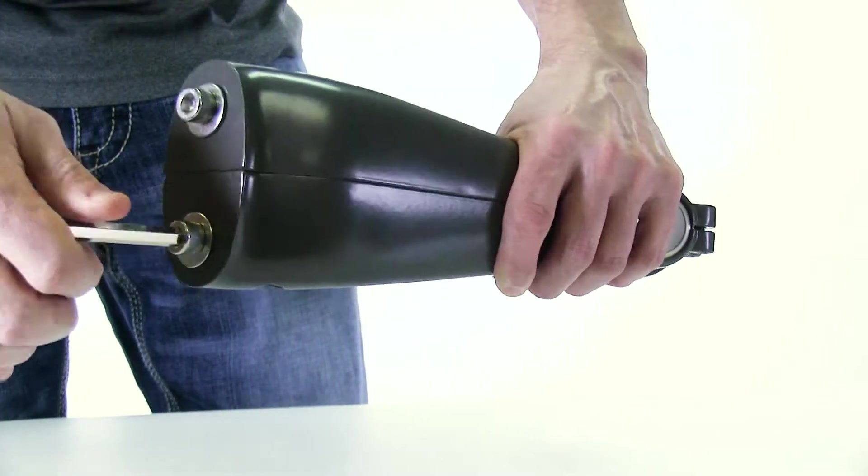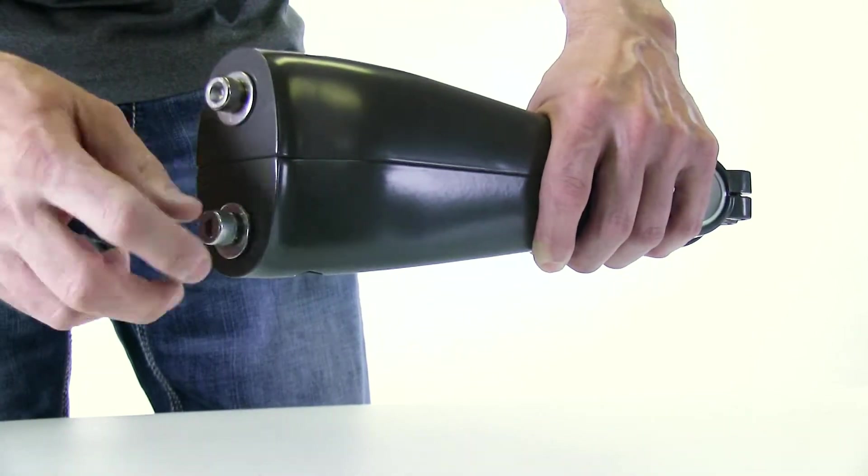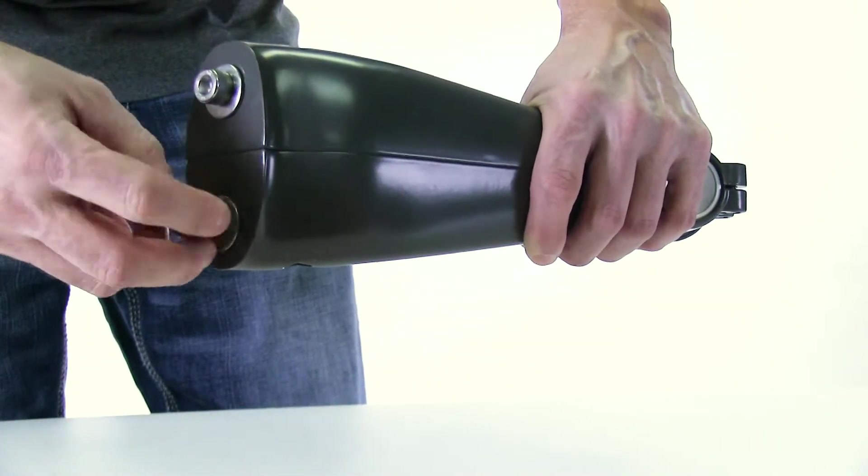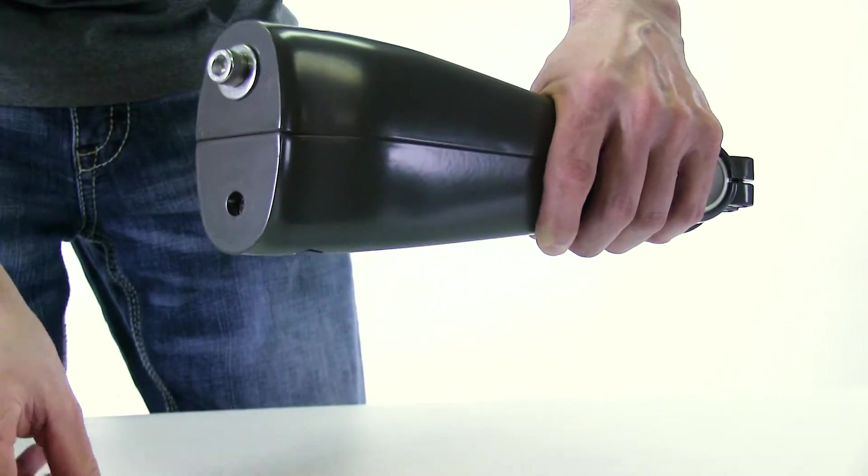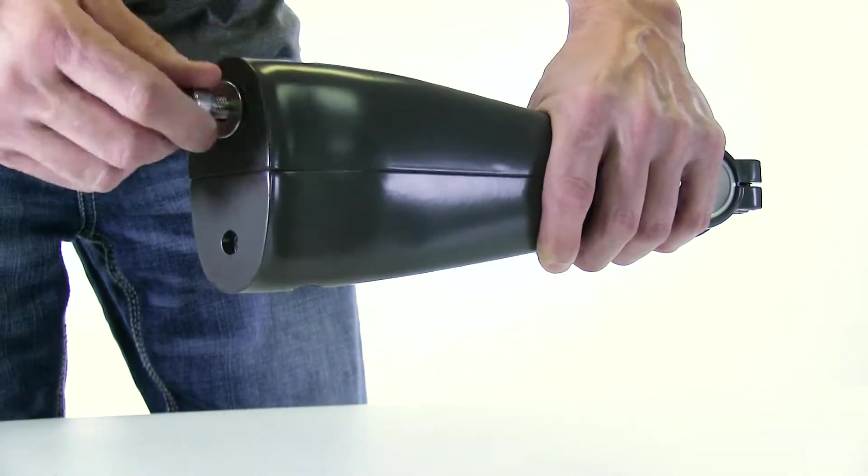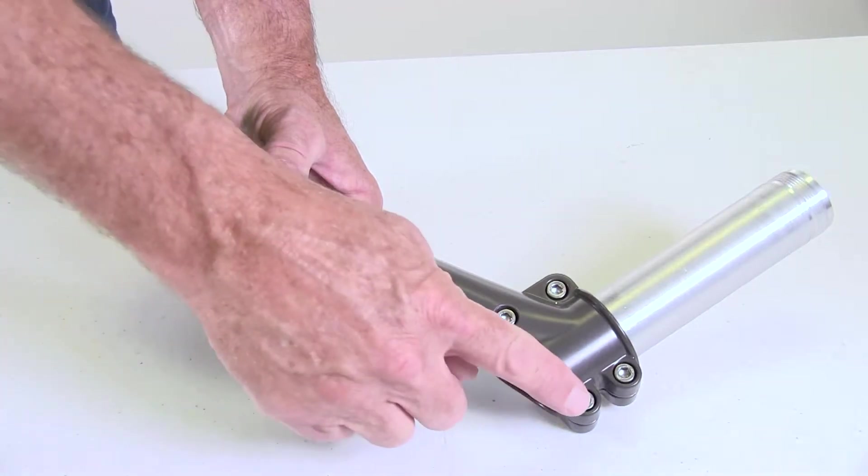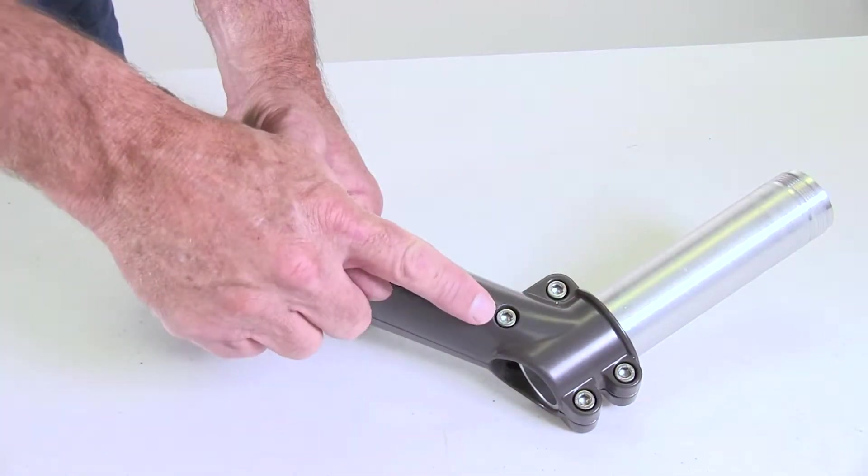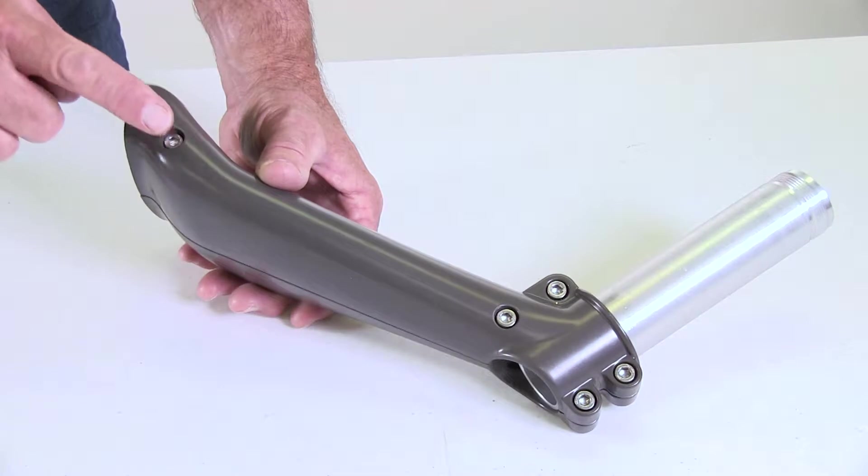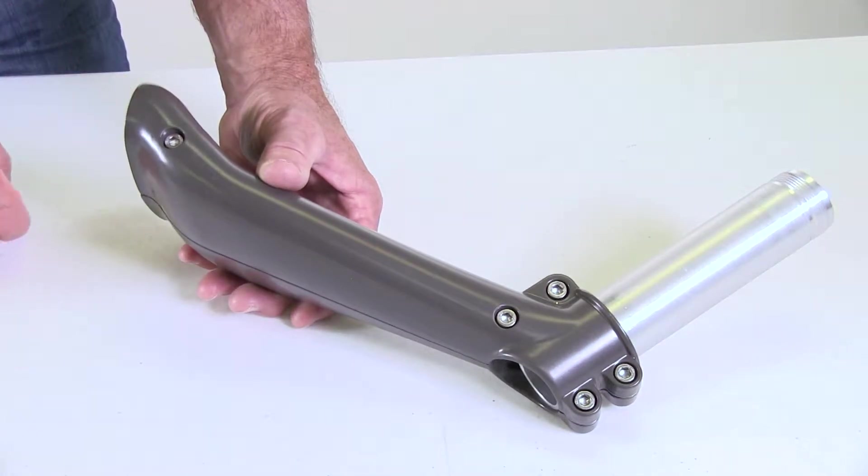Then using the same hex key wrench, loosen the two pre-installed screws on the base of the arm assembly. Once you have both screws loosened, you'll be able to remove them completely using your fingers. To install the extra capacity kit, we're going to replace this axle by removing all four of these screws and loosening this bottom one just three rotations.